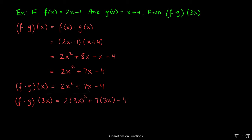And when we do that, we get 2 times the quantity 3x squared plus 7 times 3x minus 4. Now, 3x times 3x is 9x squared. We still have the two out front. 7 times 3x is 21x. And then the negative 4 comes along. 2 times 9 is 18. So our final answer is f times g of 3x is equal to 18x squared plus 21x minus 4.